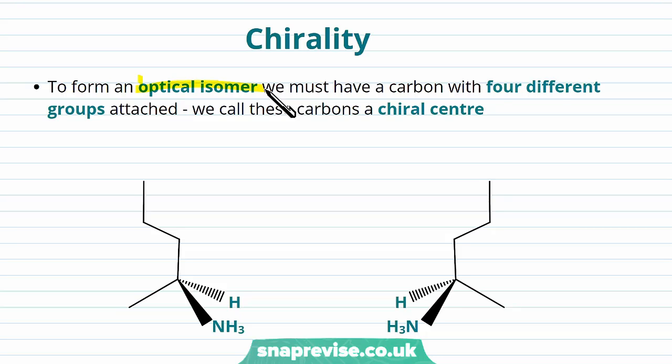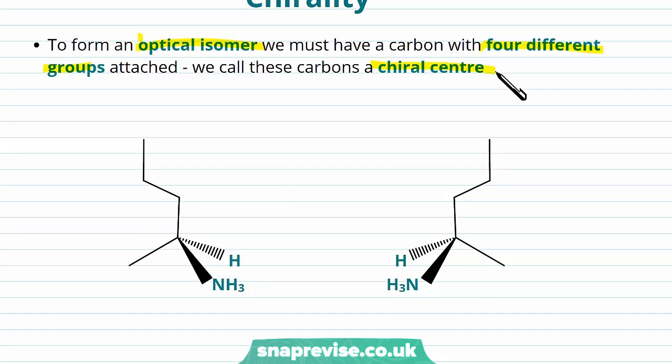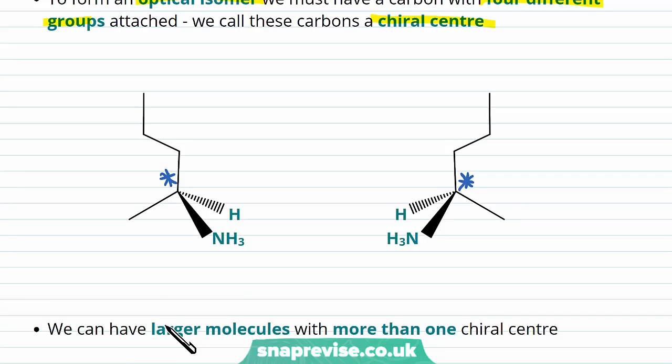We must have a carbon with four different groups attached in organic chemistry, and we call these carbons the chiral centres of the molecule. So if we look at the example here, we can see that this carbon has a 1, 2, 3 propyl group attached, and a methyl group attached, as well as a hydrogen and an NH3 group. This means that it has four different groups, and therefore will have an optical isomer.